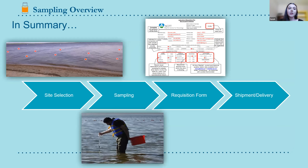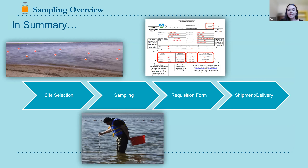To summarize cyanobacteria sampling: select your sites, collect from the 10 separate locations using the wine thief, fill out the requisition form, then package and deliver. That covers both cyanobacteria and enterococcus sampling. Now Janine will speak about deadlines for laboratory analysis.